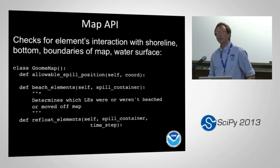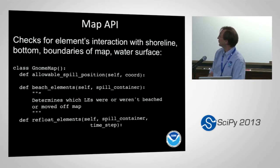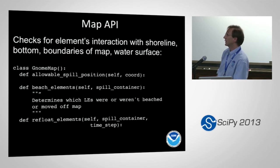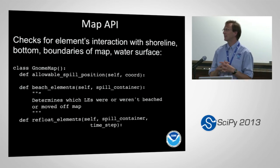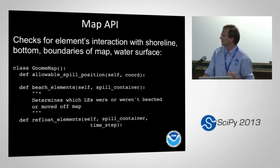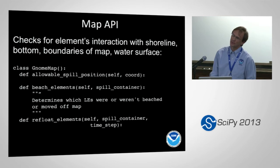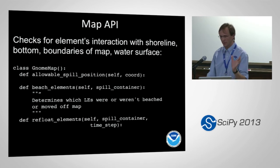There's also a map API. The map checks for particle interaction with the shoreline, bottom, or boundary. A map needs: allowable_spill_position — whether you can set a spill at a particular location, usually whether it's on land or in water, but you could also mark regions that are not well-modeled as disallowed. Then a beach_elements method that figures out which particles have hit land and beaches them, and also checks if elements have gone off the map and out of the domain. And a refloat_elements method, because particles can optionally be refloated from the shoreline based on some criteria.